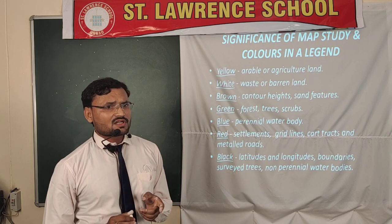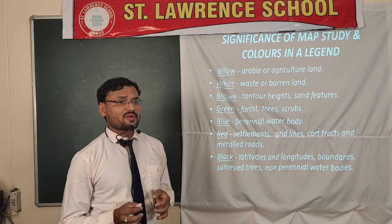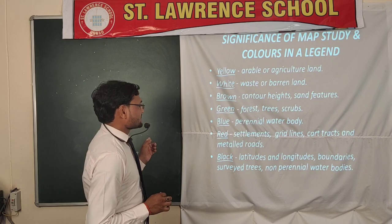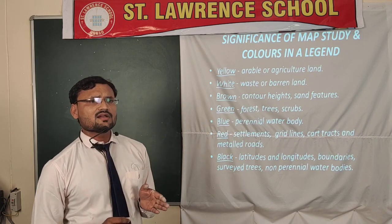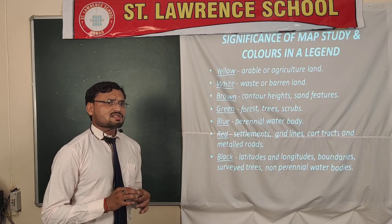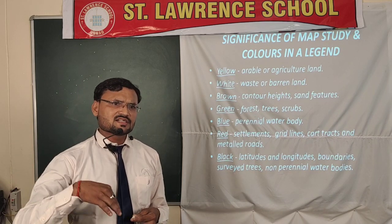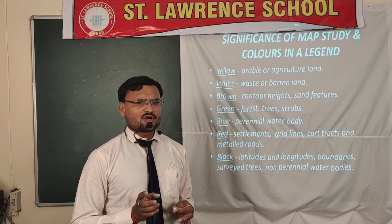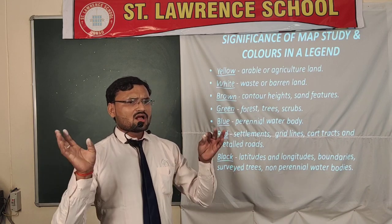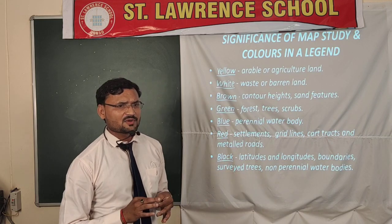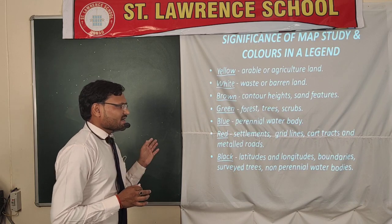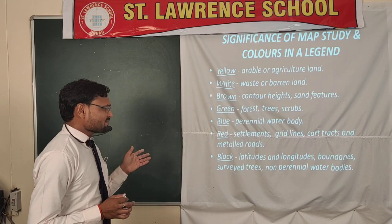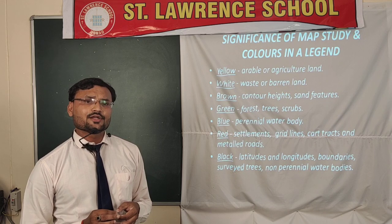Green color is used for forests, trees, and scrubs — to represent forest and vegetation regions. Blue color is used for perennial water bodies like oceans, representing water bodies that have water throughout the year. Red is used for grid lines, settlements, and metalled roads. Black color is used for longitude and latitude lines.